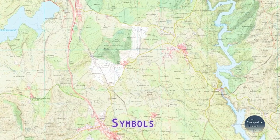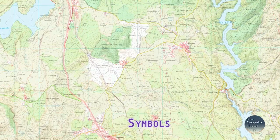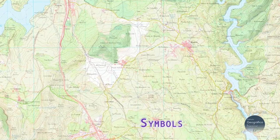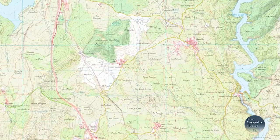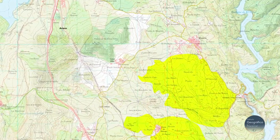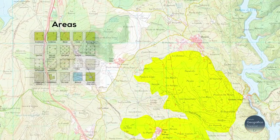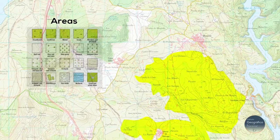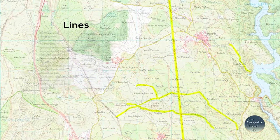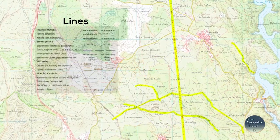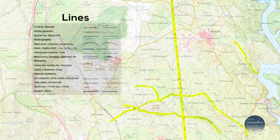Based on their geometric shape and on the map scale, objects are depicted on maps as areas for large areas, or lines for long and narrow elements.